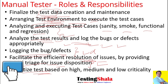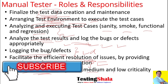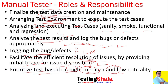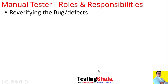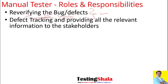A manual tester should also prioritize the written test cases — identifying which are low, medium, or critical priority — so that based on available time, they can cover the most important test cases within the given timeframe.